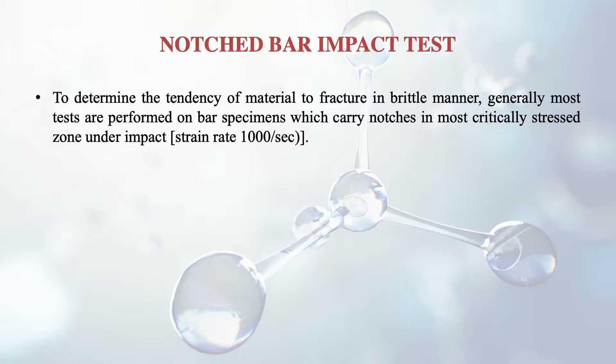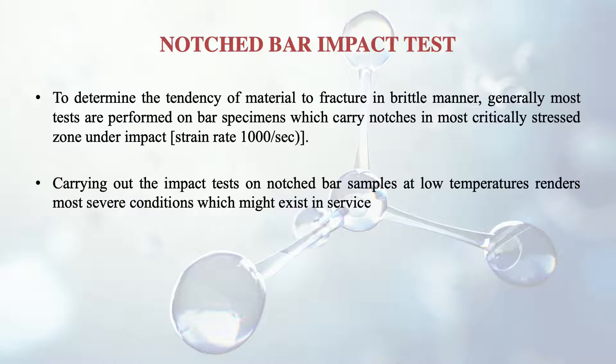Even a ductile material can fail in a brittle way depending upon service conditions. To assess this, we resort to the notched bar impact test. To determine the tendency of a material to fracture in a brittle manner, tests are generally performed on bar specimens which carry notches in the most critically stressed zone under impact. The strain rate here is 1000 per second; impact loading begins from 10 per second. Carrying out the impact test on notched bar samples at low temperatures renders the most severe conditions which might exist in service.